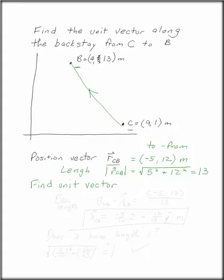The unit vector is the position vector divided by its length. So our unit vector, ucb or lambdacb, whichever you prefer, is rcb divided by 13.